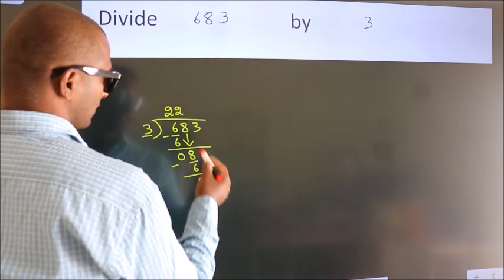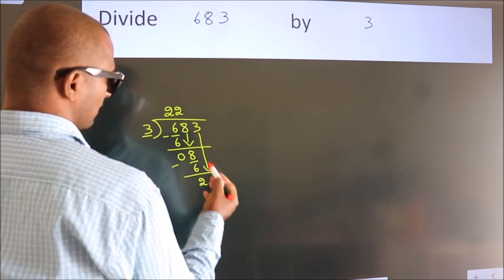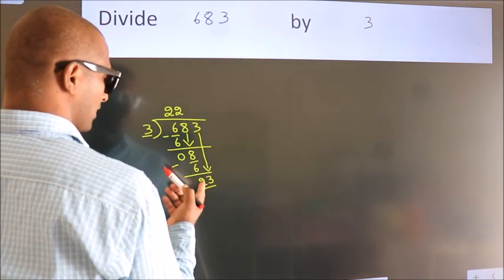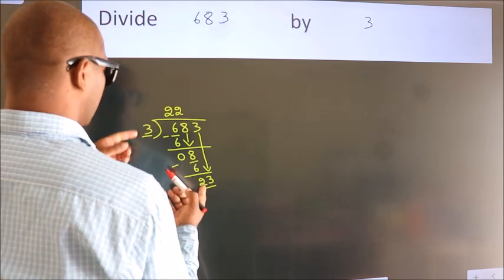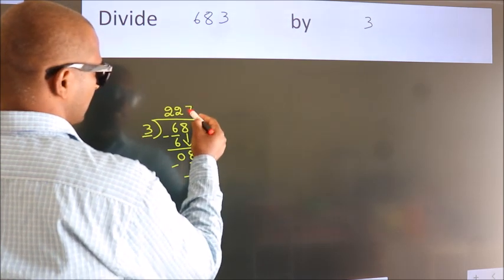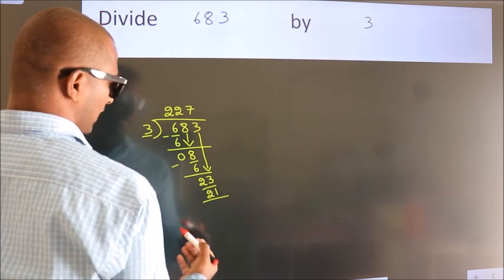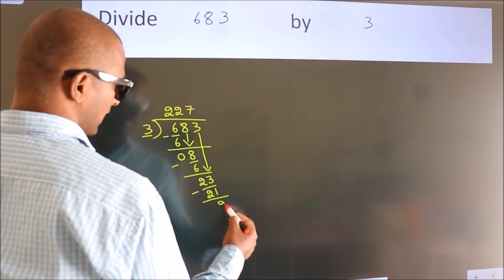After this, bring down the beside number, so 3 down, so 23. A number close to 23 in 3 table is 3 7s 21. Now, we subtract, we get 2.